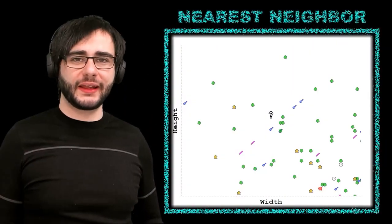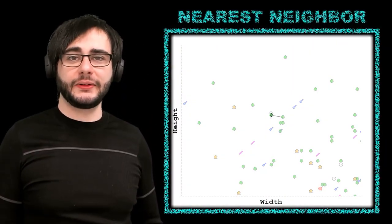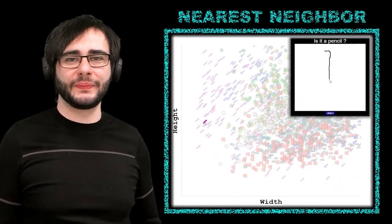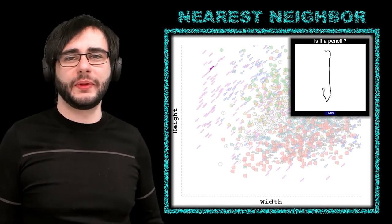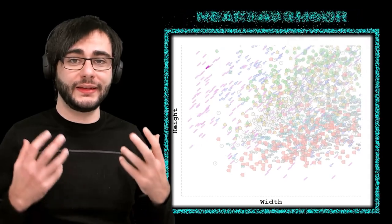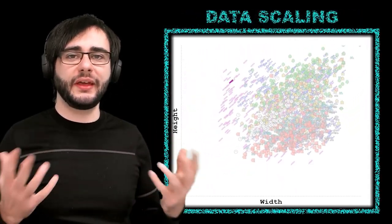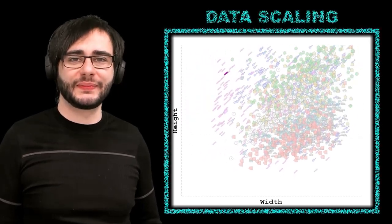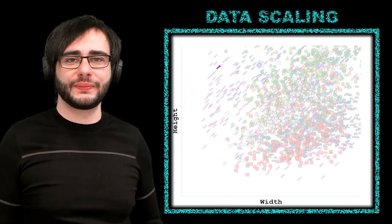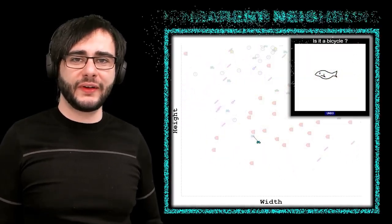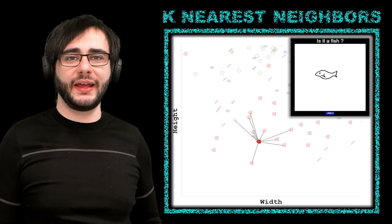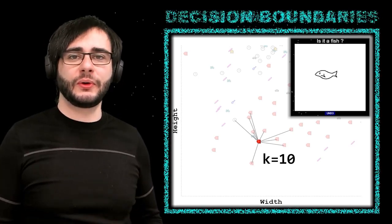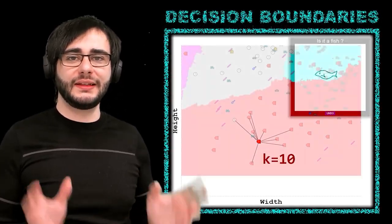The simplest learning method I can think of is the nearest neighbor classifier. I'll teach you how to implement it and integrate it with the sketchpad so it recognizes what we draw. It will work okay-ish — it's a simple method. But it can work even better if we apply data scaling, a step everybody performs when doing machine learning, but very few people can explain why. I'll make sure you understand why it helps. We then implement the more advanced k-nearest neighbors classifier and calculate its accuracy for different values of k. To understand things even better, I'll teach you how to compute decision boundaries and display them on our chart.